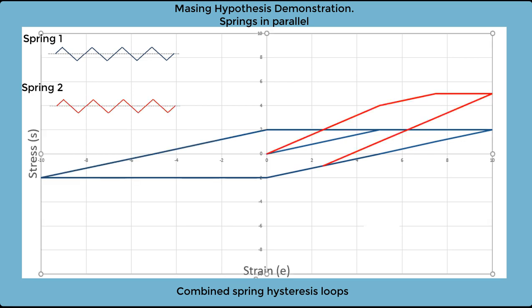So now let's complete the hysteresis loop for spring number 1. Now we add spring number 2, and we see that loading and then unloading. Now if we break this down and look carefully, we can see the different parts of the curve that have been created.